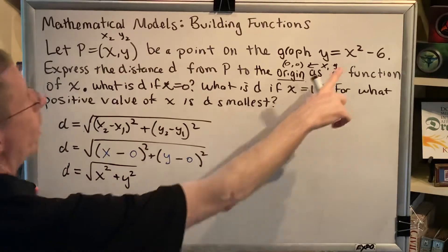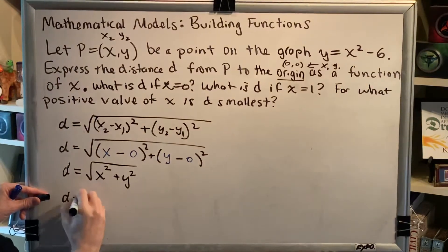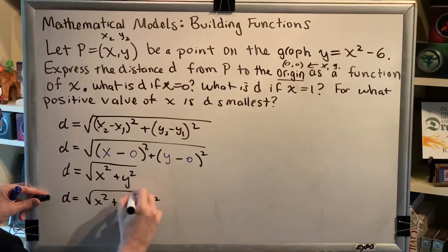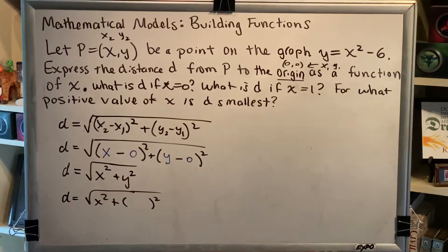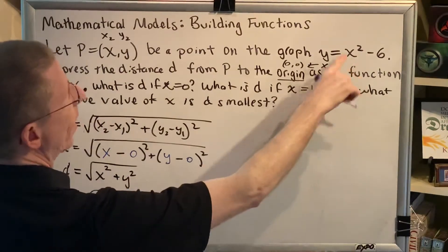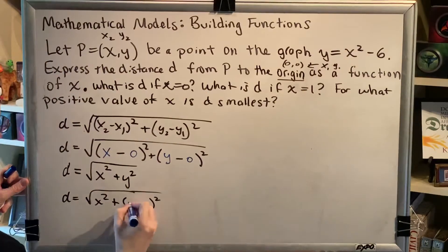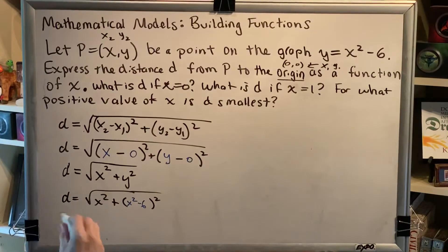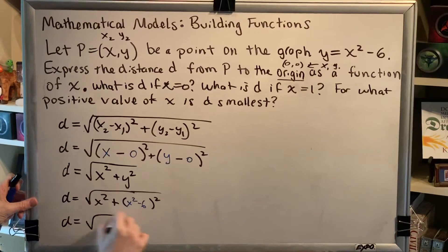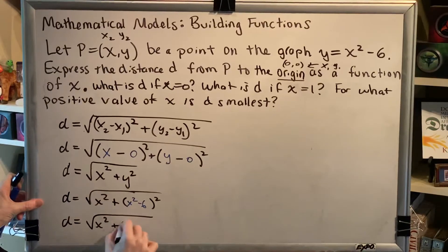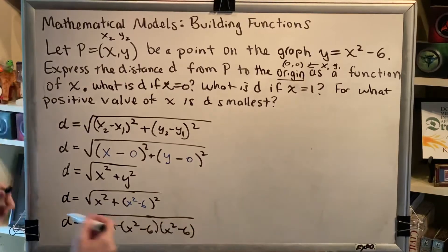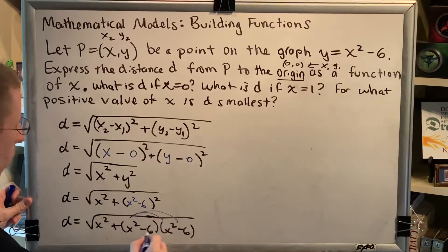Okay, now we replace y with what it equals from the problem. So we get d=√(x²+...), remember it's the y that we're replacing. So instead of y², we're going to have (x²-6)². And of course, we're going to have to actually multiply that out. So this is d=√(x²+(x²-6)(x²-6)). And we're going to use FOIL to multiply these two binomials together.